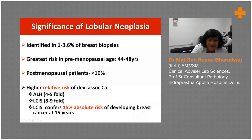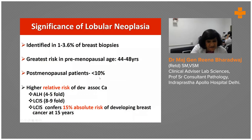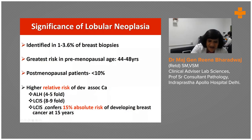Why should we recognize all this in detail? These lesions are identified in as many as 1.3 to 6% of breast biopsies. They are more common in the premenopausal age group, around 44 to 48 years of age; the postmenopausal group has a lesser risk of approximately 10%. What is the difference in significance between ALH and LCIS? ALH has a 4 to 5-fold increase in risk, while LCIS has an 8 to 9-fold increase. That means recognizing LCIS on a biopsy indicates a 15% absolute risk of developing breast cancer, although the lag period may be as long as 15 to 25 years.